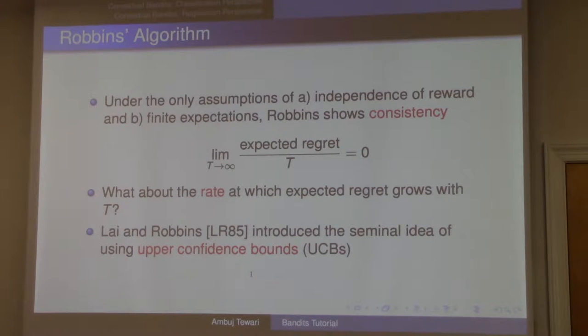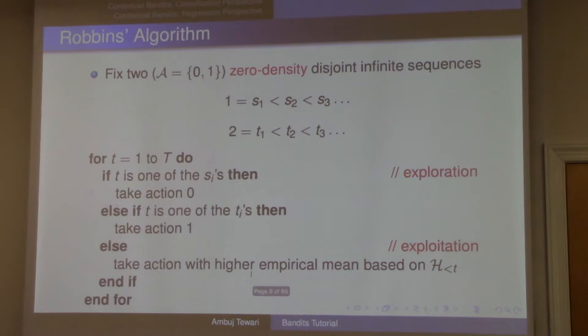Let me give you a high-level idea before we go into the details. In Robin's algorithm, he's doing this separation of exploration and exploitation. He's saying, on these time steps I'm going to explore, and on the other time steps I'm just going to believe my sample estimates and go with whichever one looks better.